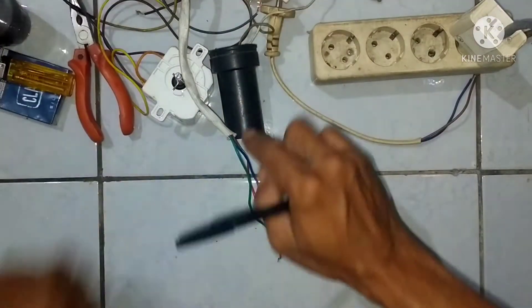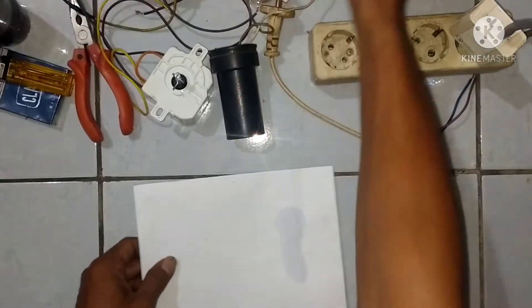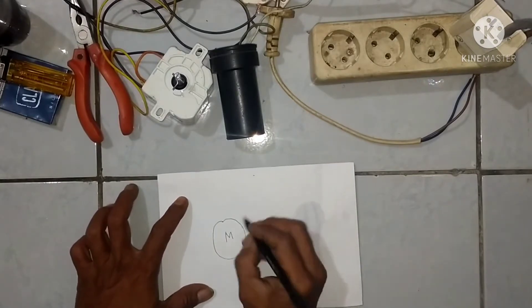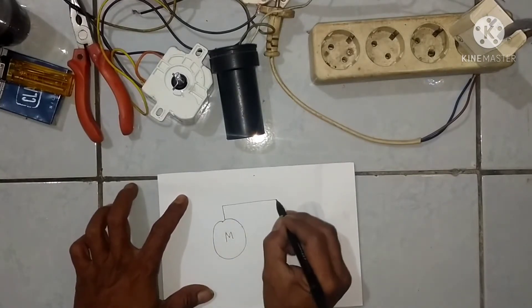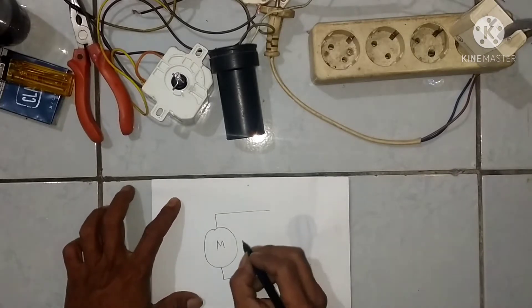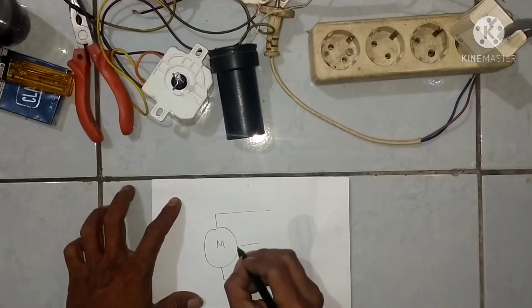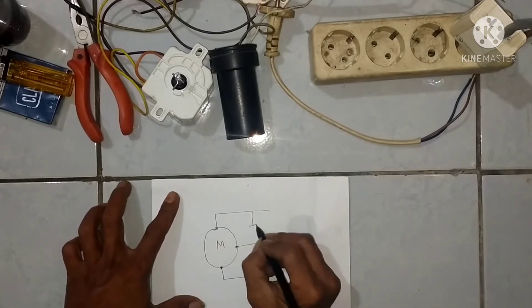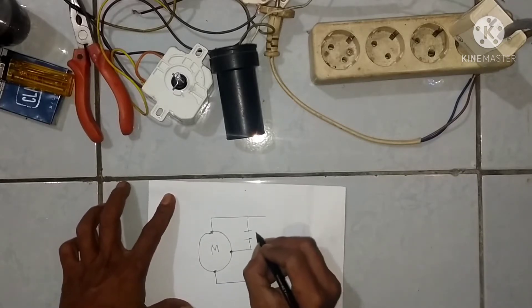Sekarang untuk lebih memudahkan, saya akan gambar ulang diagram yang tadi ada di mesin. Kita gambar ulang untuk memudahkan kita menjelaskan koneksi. Mesin saya gambarkan ini, ada tiga kabel. Ini gambar kapasitor teman-teman, kalau ada tanda gitu berarti kapasitor.